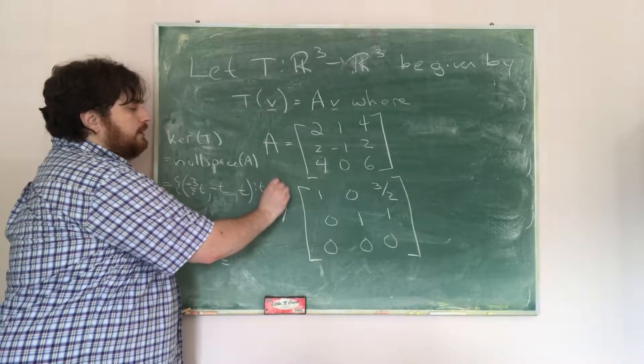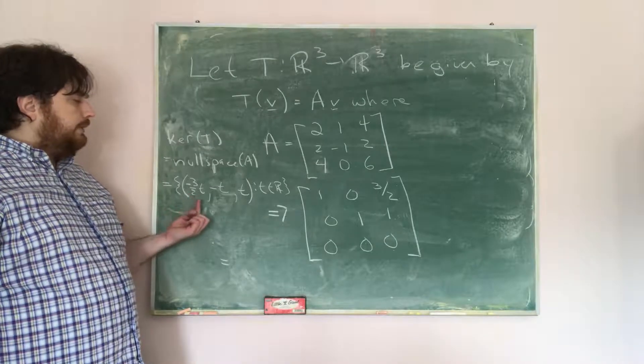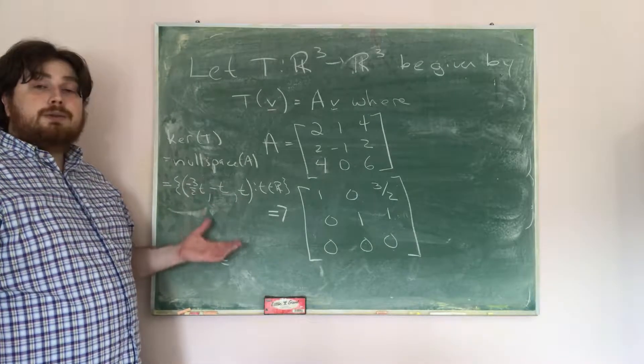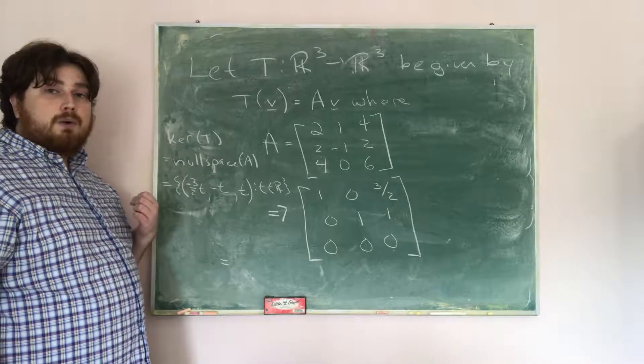And so what I have is the null space is precisely just the set of vectors of the form negative 3 halves T, negative T, T. And so therefore, that will be the kernel of T as a set of vectors of that form.